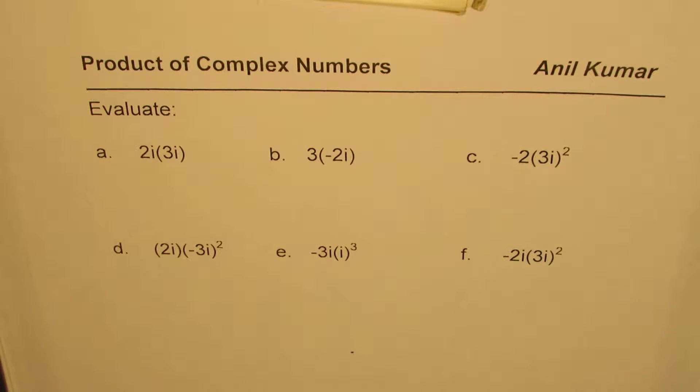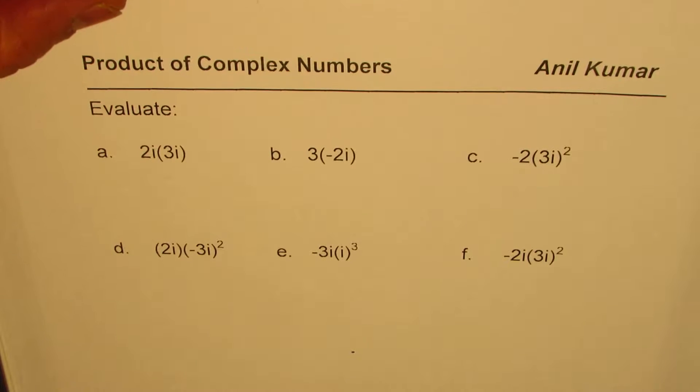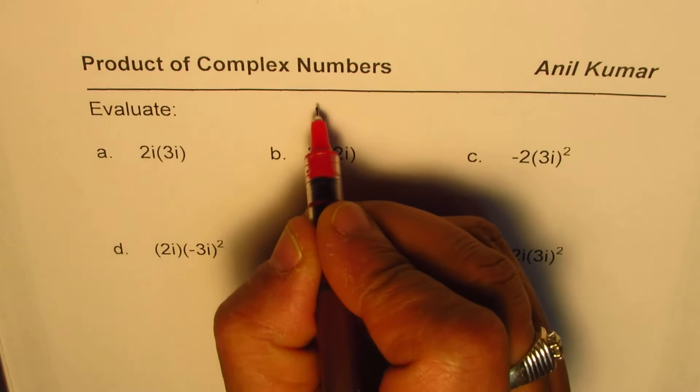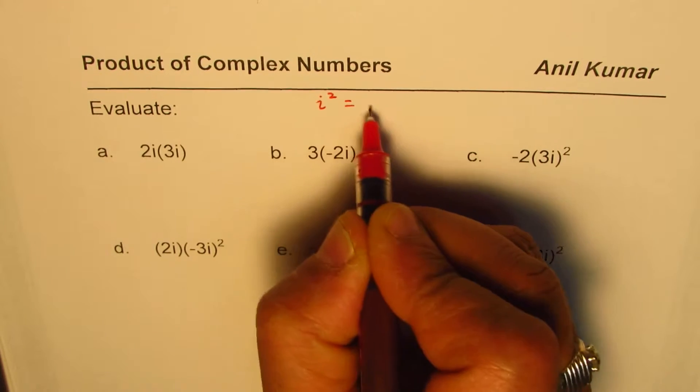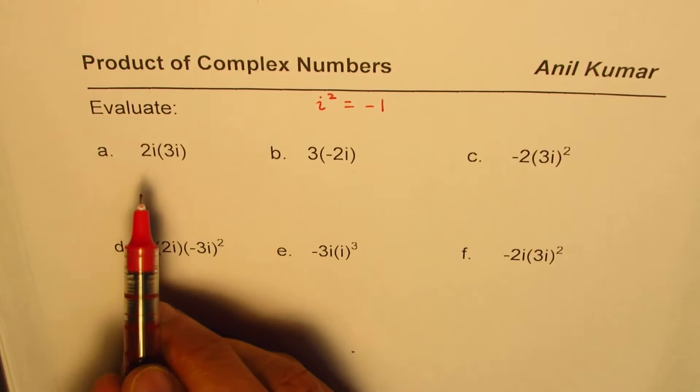I'm Anil Kumar, and now let us practice how to evaluate product of complex numbers. We are taking pure imaginary numbers to start with. We already know that i² = -1. So let's begin.